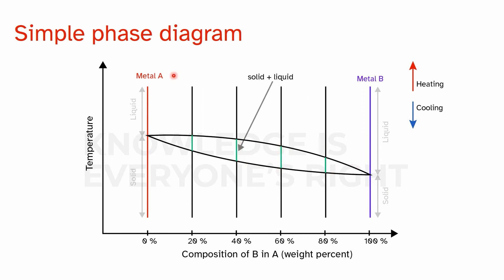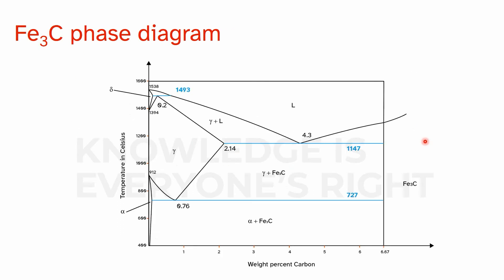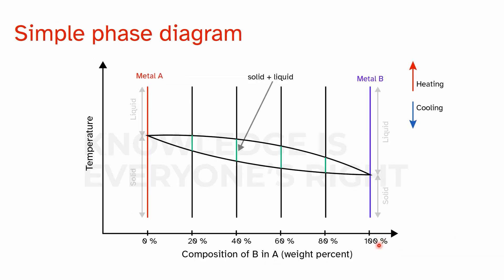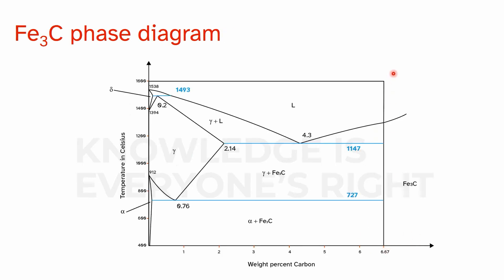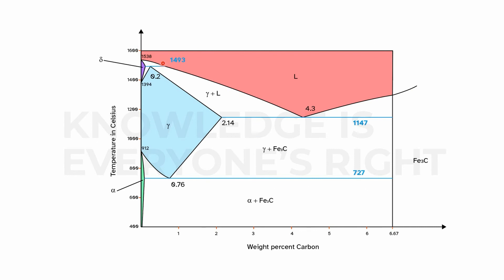Next we come to the iron-carbon phase diagram. The y-axis is temperature and the x-axis is weight percent carbon. This phase diagram represents iron and carbon, where carbon is the alloying element. The x-axis only goes to 6.67 weight percent carbon because what comes after is not of practical importance to engineers. Above the liquidus line, any combination of iron and carbon is entirely liquid.